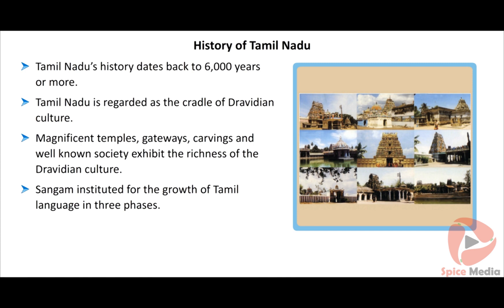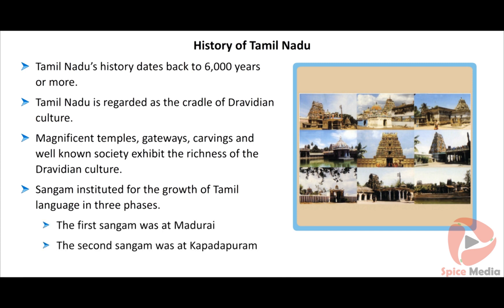Sangam was instituted for the growth of Tamil language in three phases. The first Sangam was at Madurai, the second Sangam was at Kapadapuram, and the third Sangam was at Madurai. Tholkapiam, the grammar of Tamil language, belonged to the third Sangam. Yettutogai and Pattupattu are the classical works of the Sangam period.